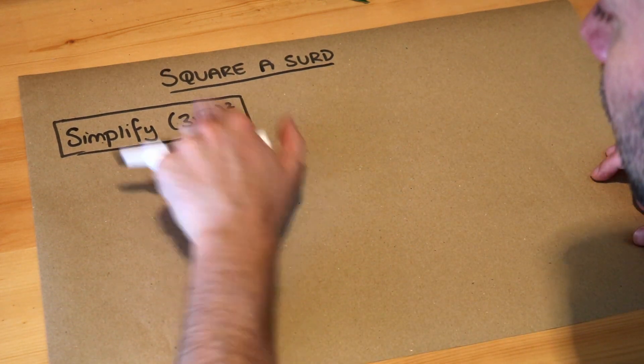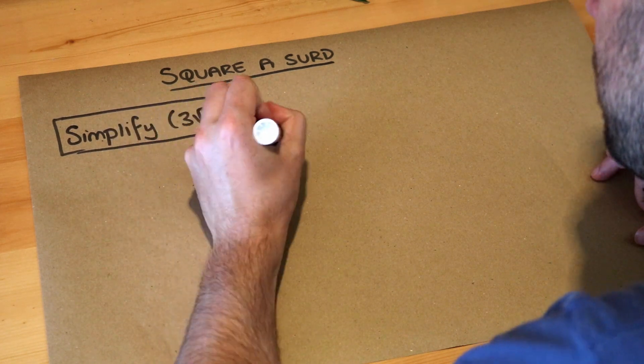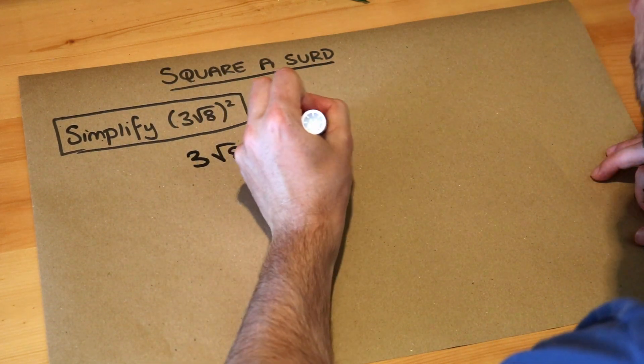Now whenever we square something we just multiply that thing by itself, so the 3 root 8 is going to be multiplied by itself, 3 root 8.